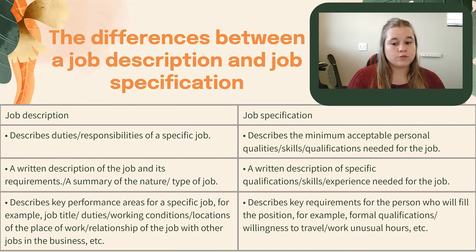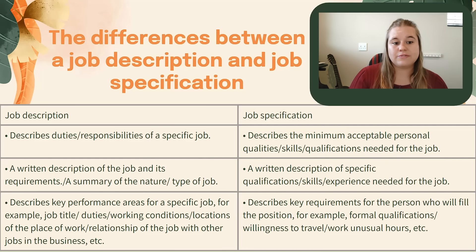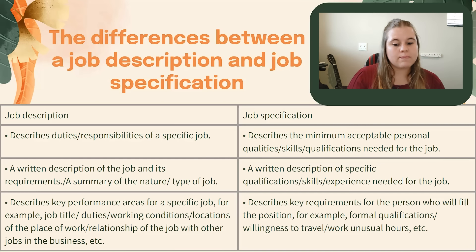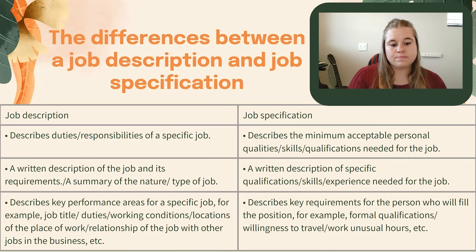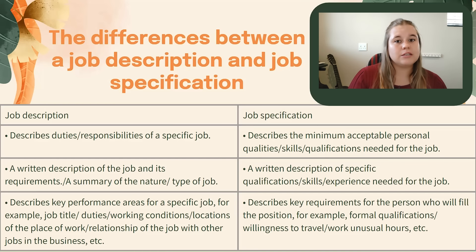Let's look at the differences between job description and job specification. A job description describes the duties or responsibilities of a specific job. It is a written description of the job and its requirements — a summary of the type of job. It describes key performance areas and includes details like the job title, duties, working conditions, location of the workplace, and the relationship of the job with other jobs in the business. A job specification describes the minimum acceptable personal qualities, skills, and qualifications needed for the job. It is a written description of specific qualifications, skills, or experience needed, and describes the key requirements for the person who will fill the position — for example, formal qualifications or willingness to travel or work unusual hours.